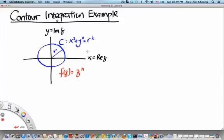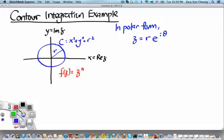If we write the complex number z in polar form, we see that z equals r e to the i theta. And along this contour, we note that r is constant.